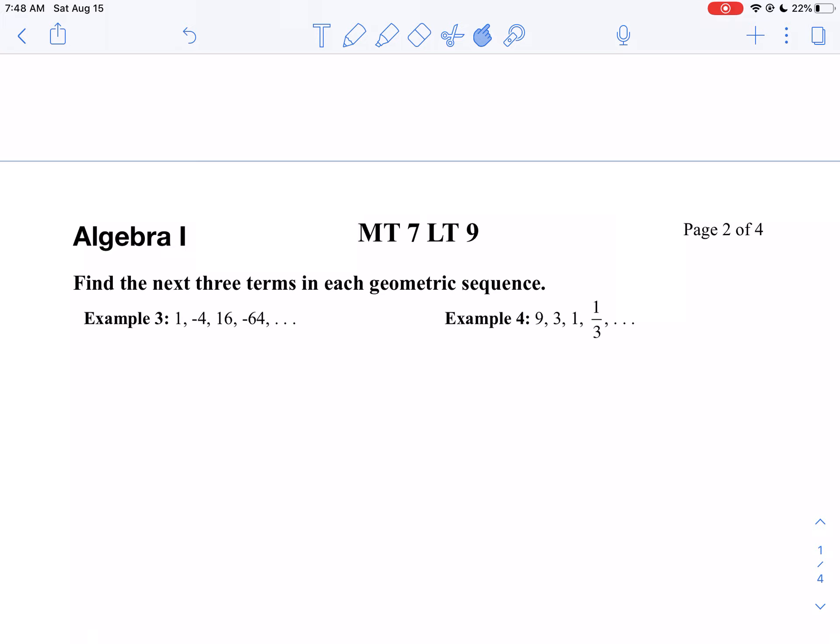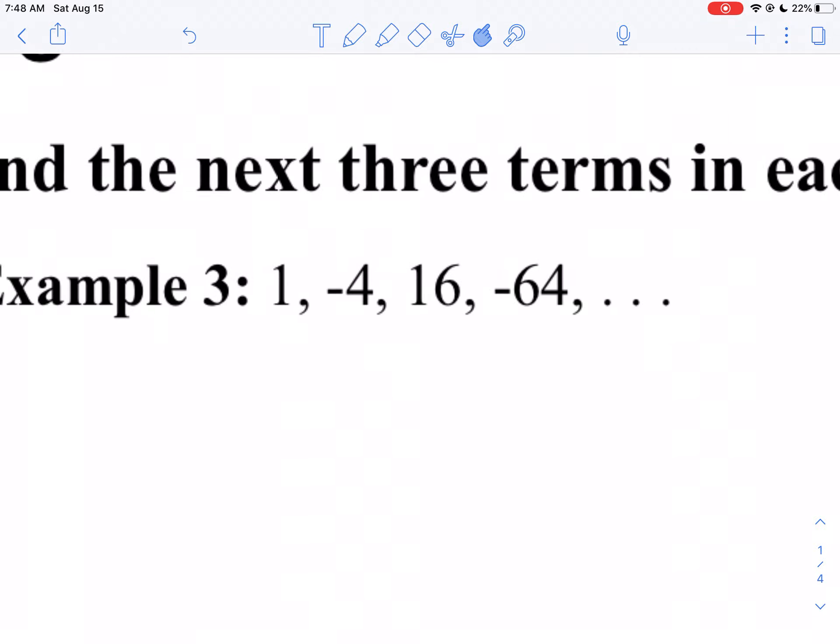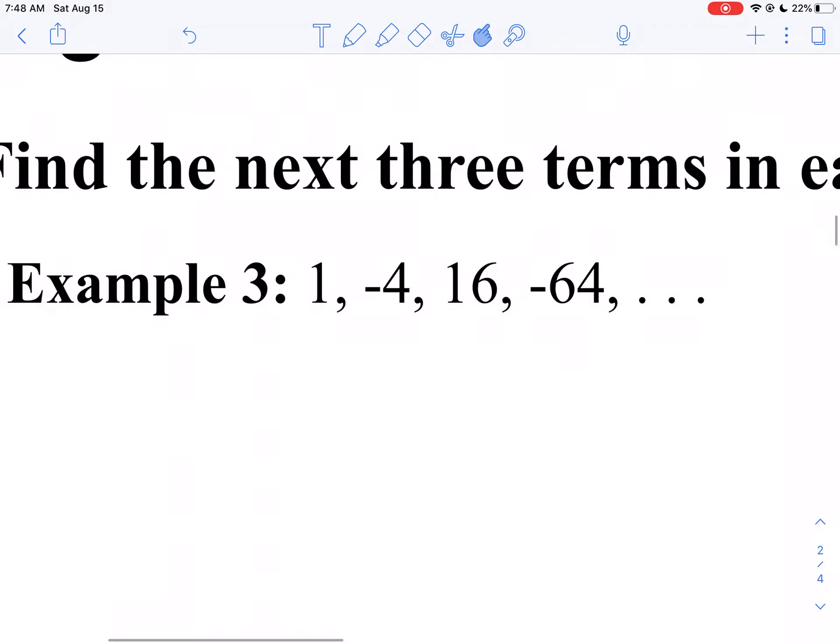So if I take a look at example three here, to find the common ratio, I'm going to divide two consecutive terms. So I'm going to take negative four and I'm going to divide by one. I'll take the second term divided by the first term.